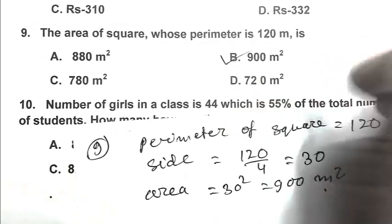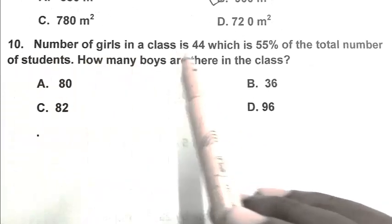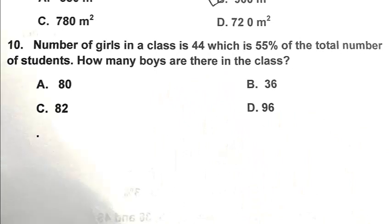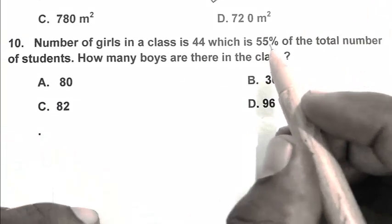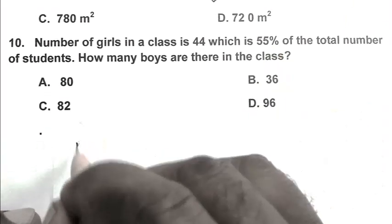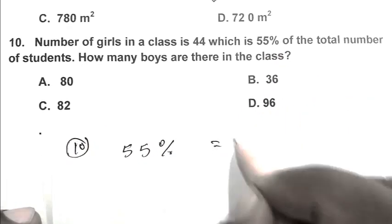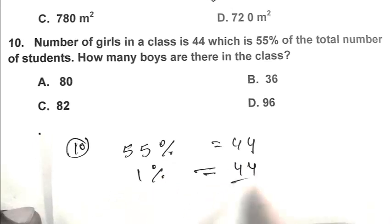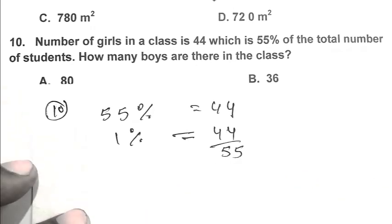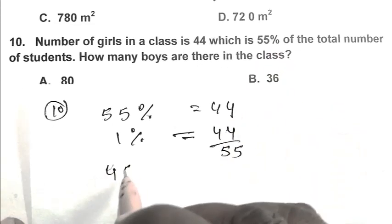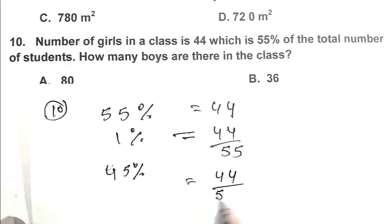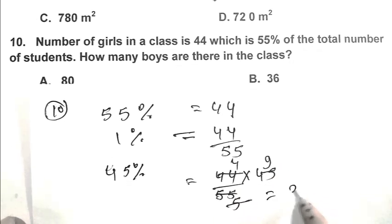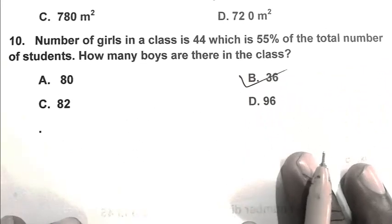Question number 10: The number of girls in a class is 44, which is 55% of the total number of students. How many boys are there? 55% equals 44, so 1% equals 44 upon 55. The remaining 45% are boys, so 45% equals 44 upon 55 multiplied by 45, which equals 36. So B is the right answer. Thank you for watching, have a good day.